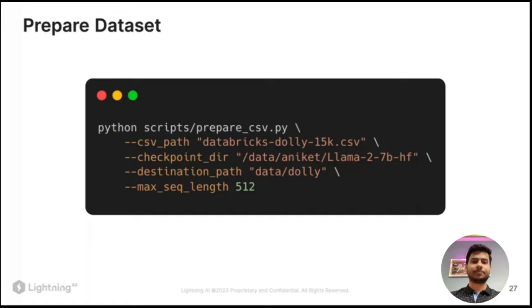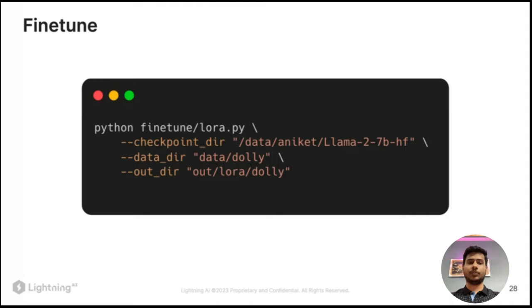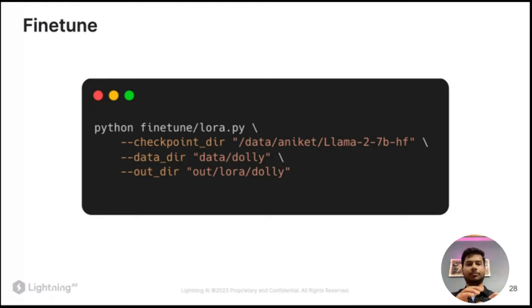After preparing your dataset, you run the script finetune/lora.py to fine-tune the Llama 7 billion parameter base model. You provide the checkpoint directory, data directory, and output directory. The output directory stores intermediate checkpoints during training — so if training crashes, you can resume later — and also stores logs and useful information to inspect your model's performance.